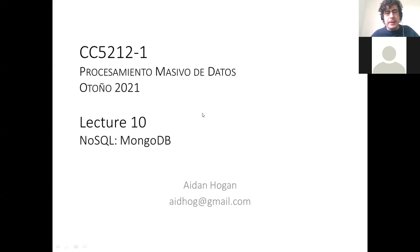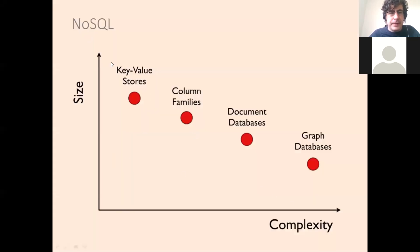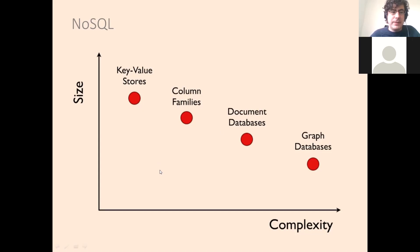Today we're going to talk about MongoDB, which is one of the most popular, if not the most popular NoSQL system in practice today. We spoke about four different categories of NoSQL systems, from those that are most scalable towards those that exhibit higher levels of complexity. We've already seen key-value stores and column family stores. Today we're going to talk about document databases. We already saw one, which was Elasticsearch, in a previous class in the context of indexing and searching over text. The next class will speak about graph databases, but today we focus on document databases.